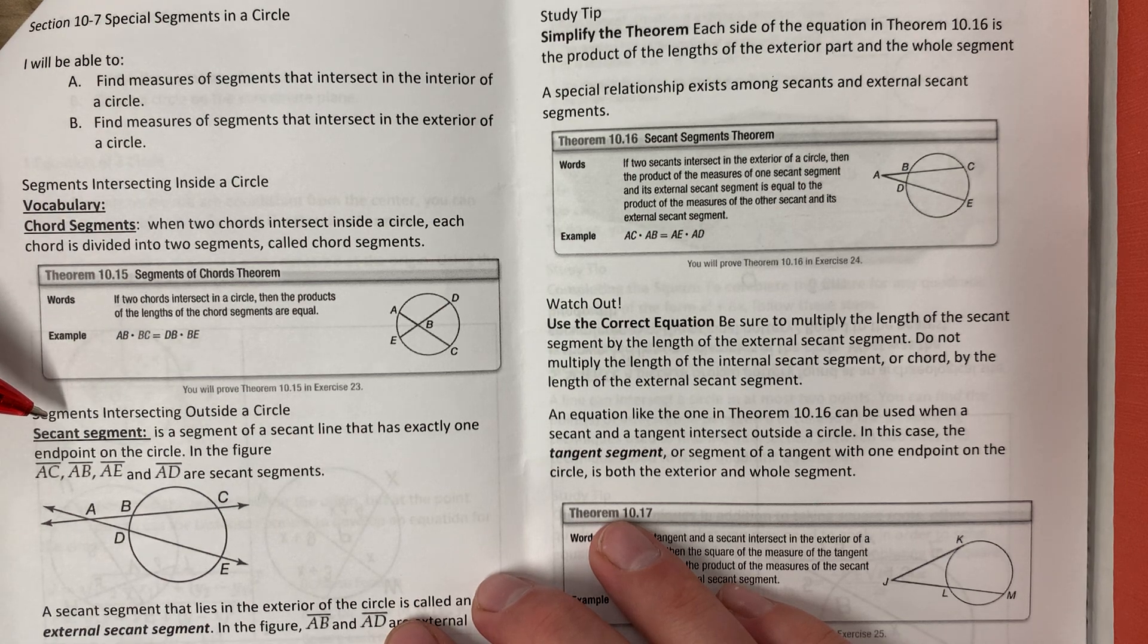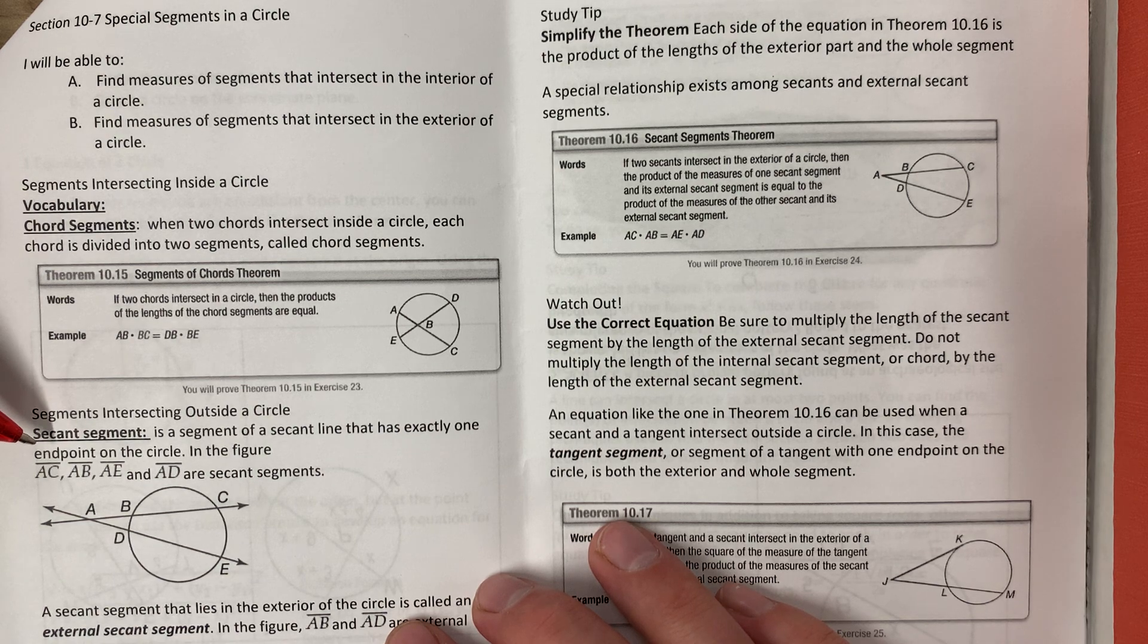Segments intersecting outside a circle: a secant segment is a segment of a secant line that has exactly one endpoint on the circle. In the figure,